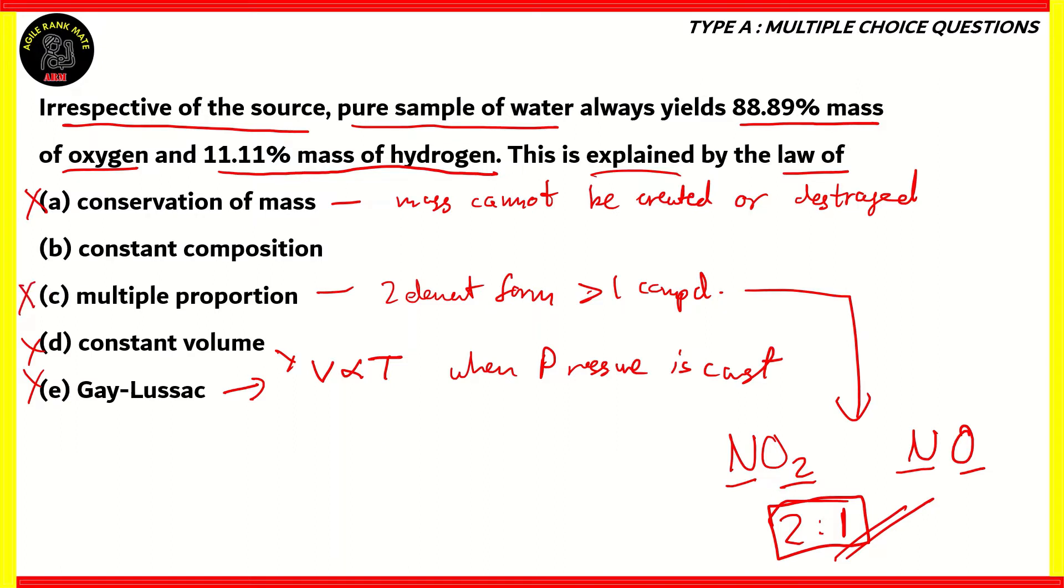However, the law of multiple proportion involves more than one compound. So option C is incorrect. The right answer is option B, constant composition. The law of constant composition states that chemical compounds made out of elements are present in a fixed ratio by mass. So if you were to take water from the sea or water from the river, it always yields 88.89% mass of oxygen and 11.11% mass of hydrogen. So option B is the correct option here.